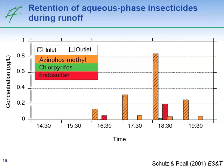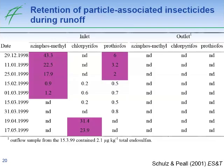For runoff, we saw a similar situation. During one of the strongest runoff events monitored in the Lourens River catchment, concentrations of three different insecticides at the inlet were quite high, but outlet concentrations were at least a factor of 10 lower. So during runoff events, these constructed wetlands work very well in reducing pesticide concentrations. They work even better for particle-associated insecticides, measured using particle samplers at the inlet and outlet. Although high concentrations of different insecticides were found at the inlet, current use insecticides were never detected at the outlet — essentially a 100% reduction.